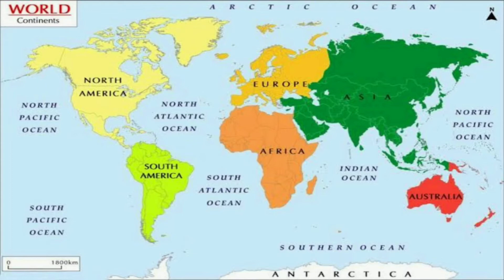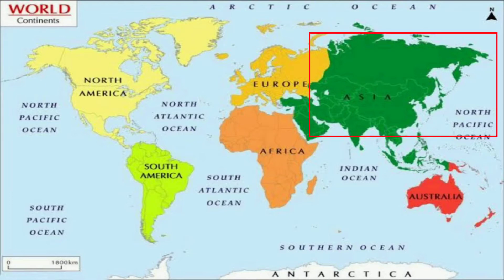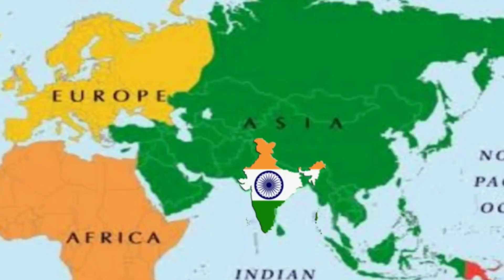The land on earth is divided into seven continents: Asia, Europe, Africa, North America, South America, Australia, and Antarctica. Asia is the largest continent and Australia is the smallest continent. India is in the continent of Asia, so we live in the continent of Asia.